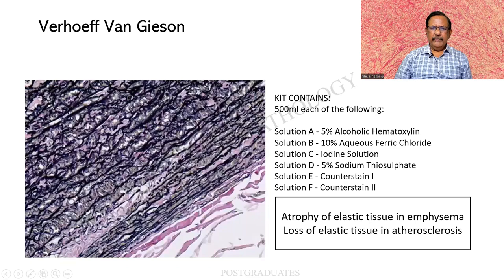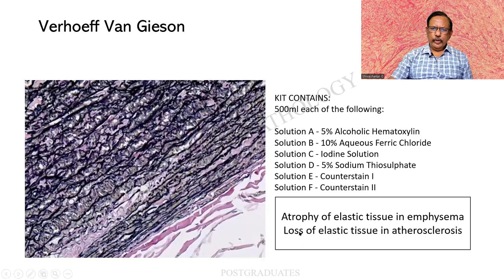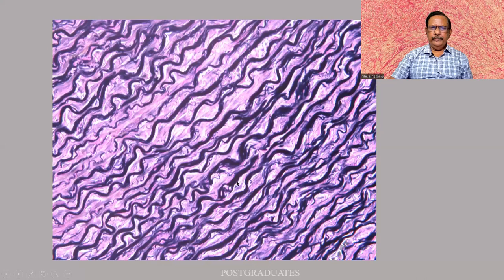Look at the elastic fibre being stained — a beautiful picture. This is a kit and these are the components: haematoxylin, ferric chloride, iodine, sodium thiosulfate, and counterstain. The counterstain is the last step in any staining — eosin, for example, is a counterstain; alcian blue and alcian green are also counterstains. In this case there is an atrophy of the elastic tissue in emphysema — the elastic fibres are present but some kind of weakness can be seen. There can also be a loss of tissue in atherosclerosis. A beautiful picture showing wavy elastic fibres parallelly arranged — a normal elastic stain — the Verhoeff's Van Gieson.